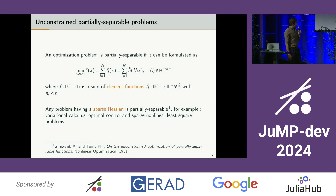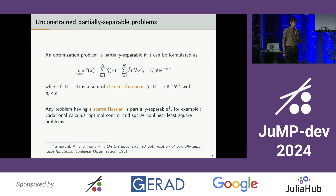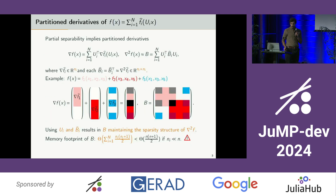For example, variational calculus, optimal control, and sparse nonlinear least squares problems are all partially separable.